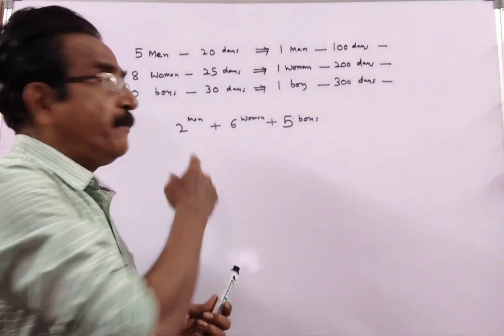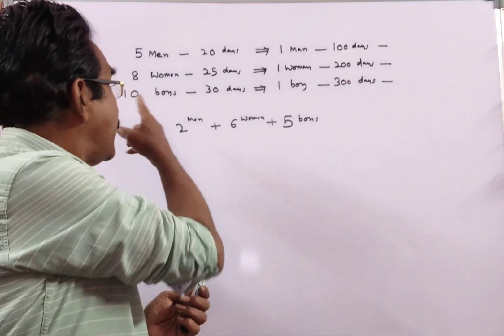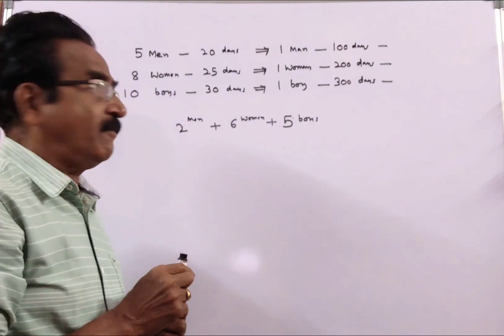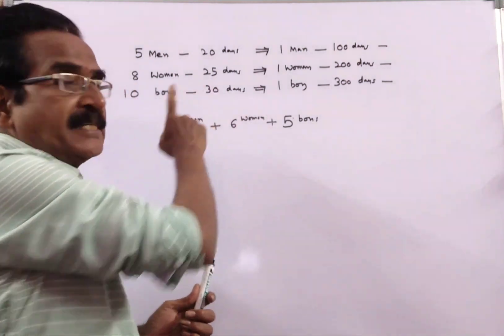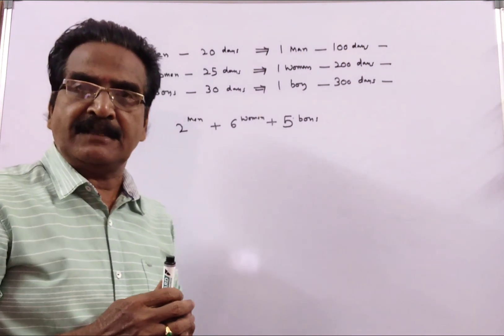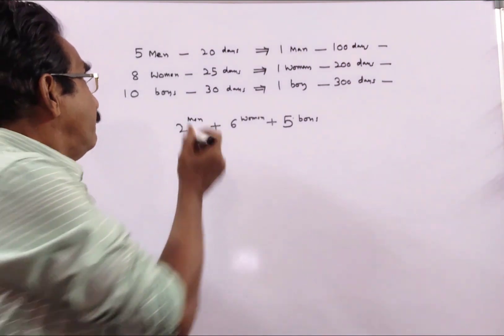See friends, 5 men can build a wall in 20 days and 8 women can build the same wall in 25 days. 10 boys can build the same wall in 30 days.